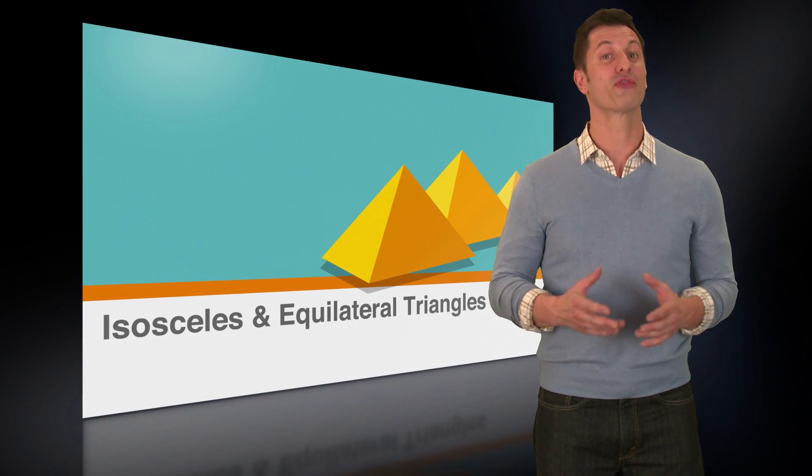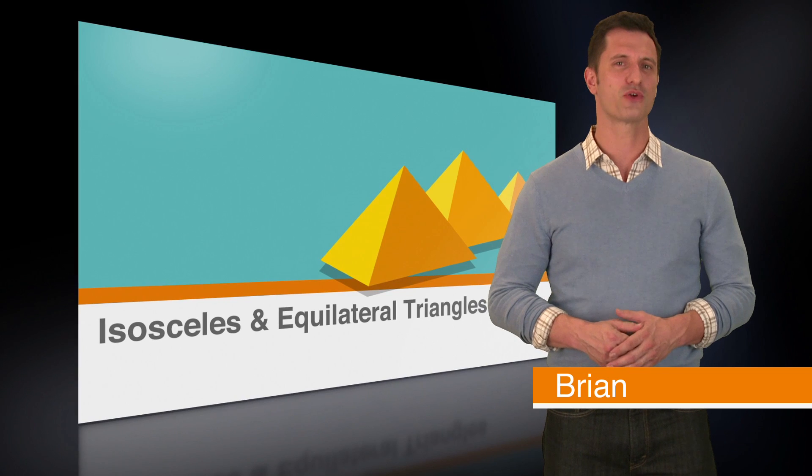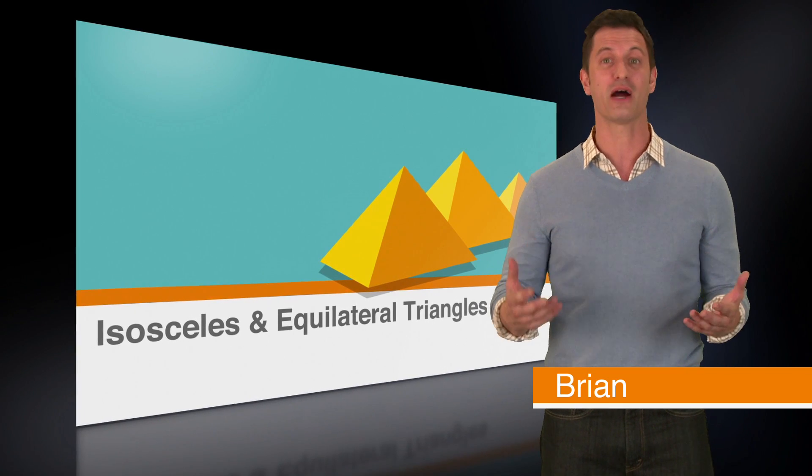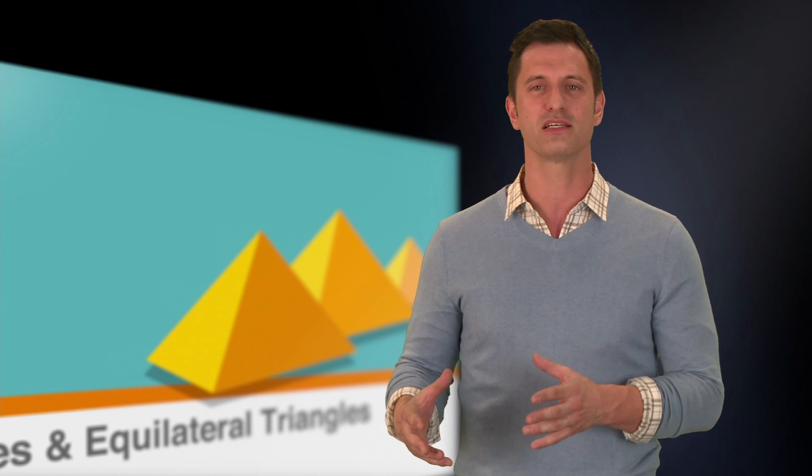With triangles, there are three sides to every story and also three angles. With all these triangles flying around, we're bound to encounter some that have equal sides and/or equal angles. In this lesson, we're going to review isosceles and equilateral triangles.